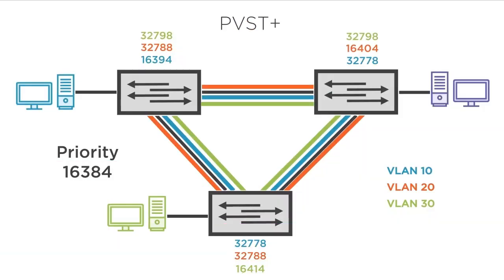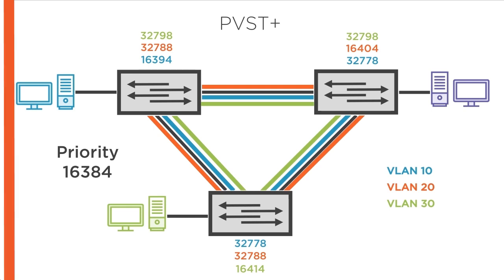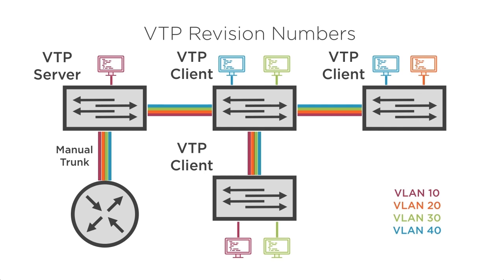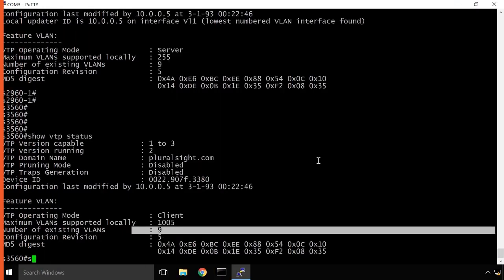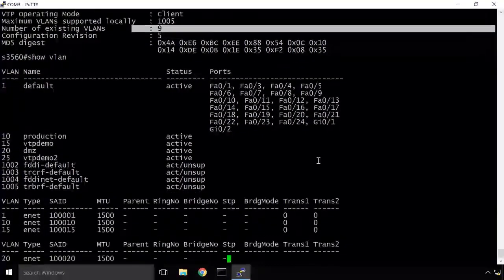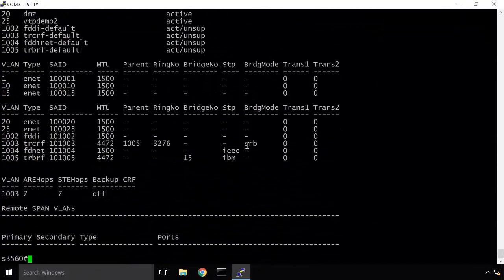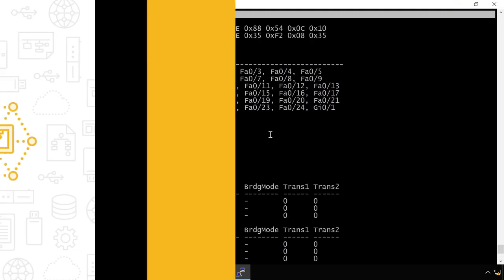Understanding how Ethernet works in an enterprise environment is one of the most common skills required by a network engineer or network technician. STP, or Spanning Tree Protocol, is a mandatory protocol required to prevent Layer 2 networks from crashing, and Ether Channel will allow us to provide more bandwidth between devices when required.